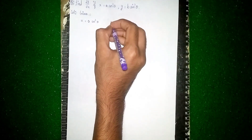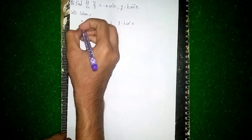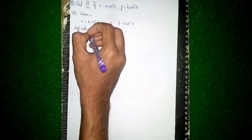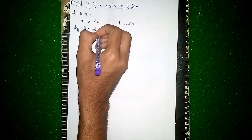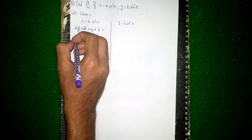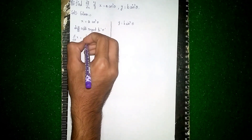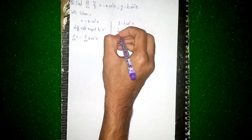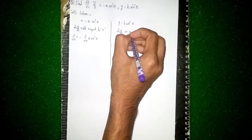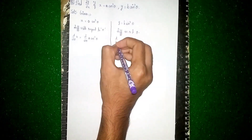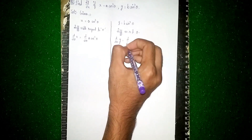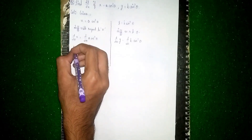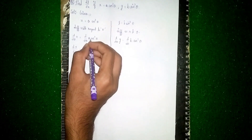We split this into two parts and differentiate with respect to theta. So d/dθ of x = d/dθ of a·cos³θ. Similarly, d/dθ of y = d/dθ of b·sin³θ. So dx/dθ equals — a comes outside as a constant — and dy/dθ equals b times d/dθ of sin³θ.